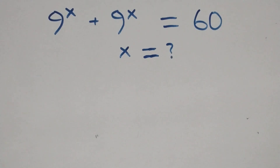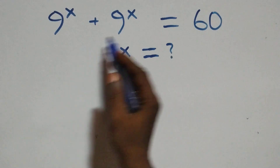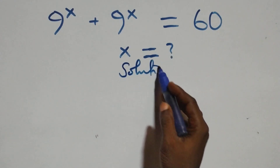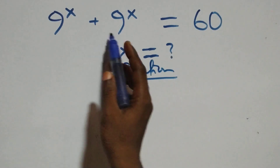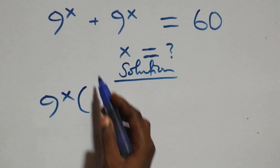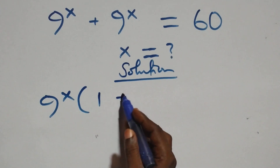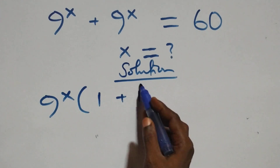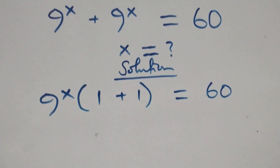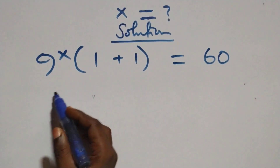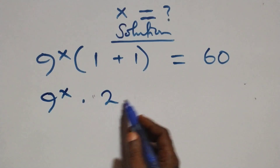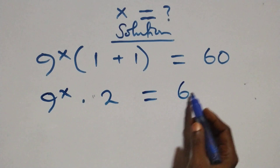Hello, you are welcome. How to solve this nice exponential equation. We have 9 raised to power x, and we can factor 9 raised to power x out. We have 9 raised to power x into brackets: we have 1 plus 1, equals 60. This is the same as 9 raised to power x times 2, equals 60.